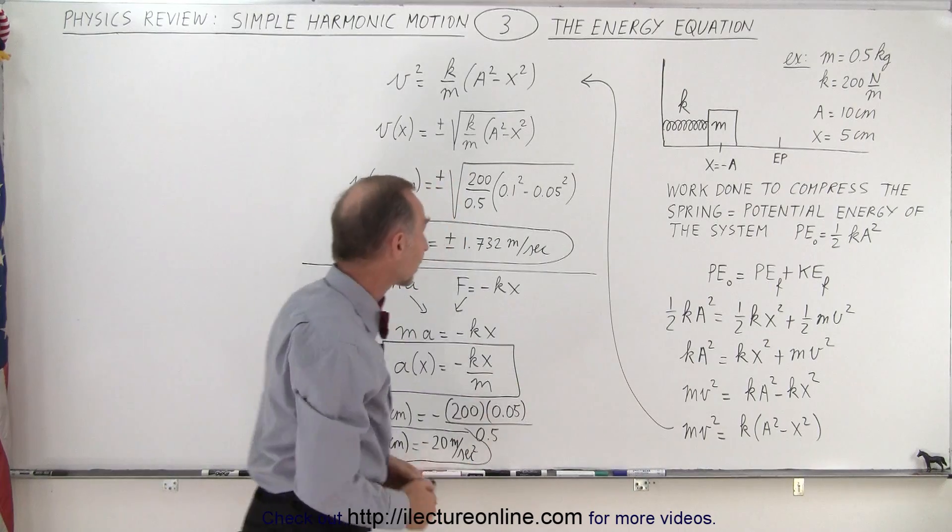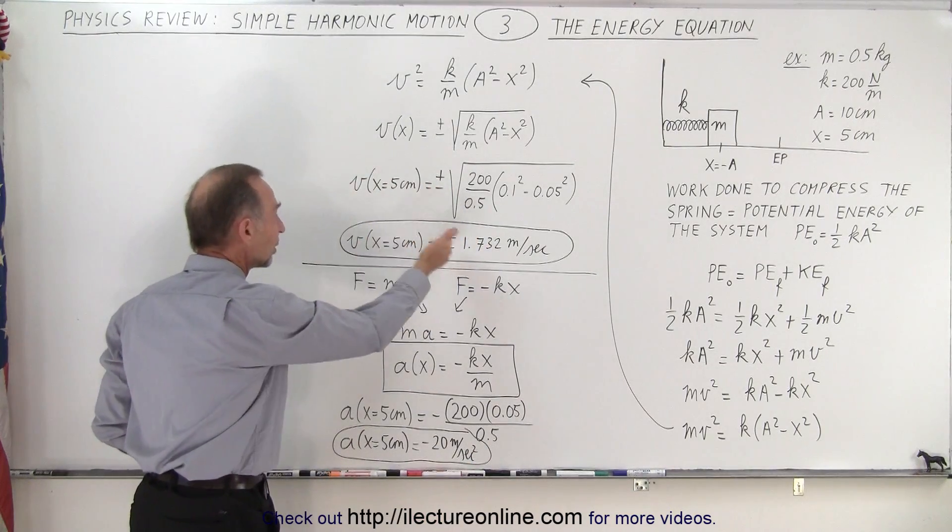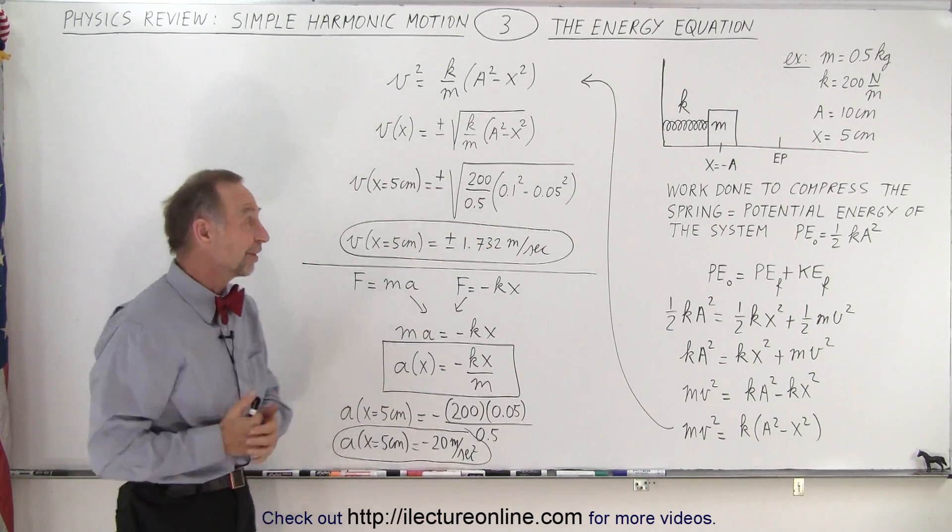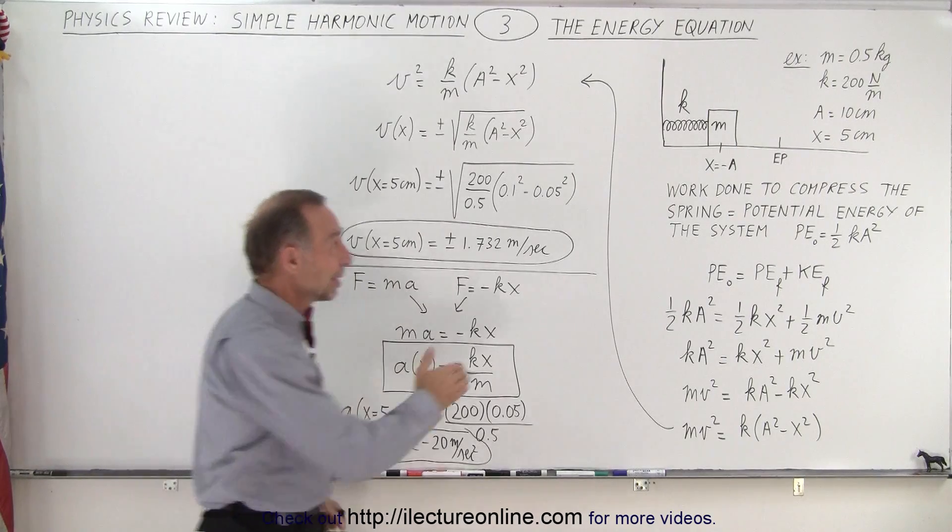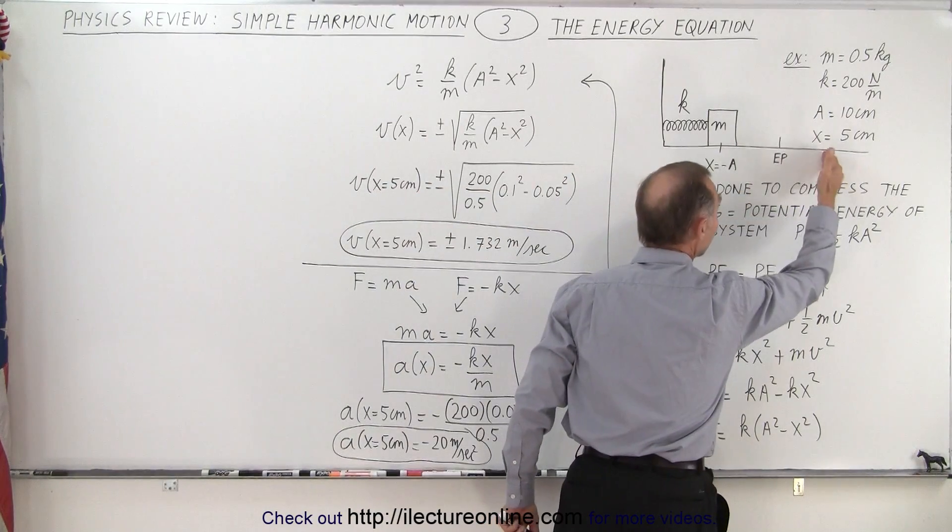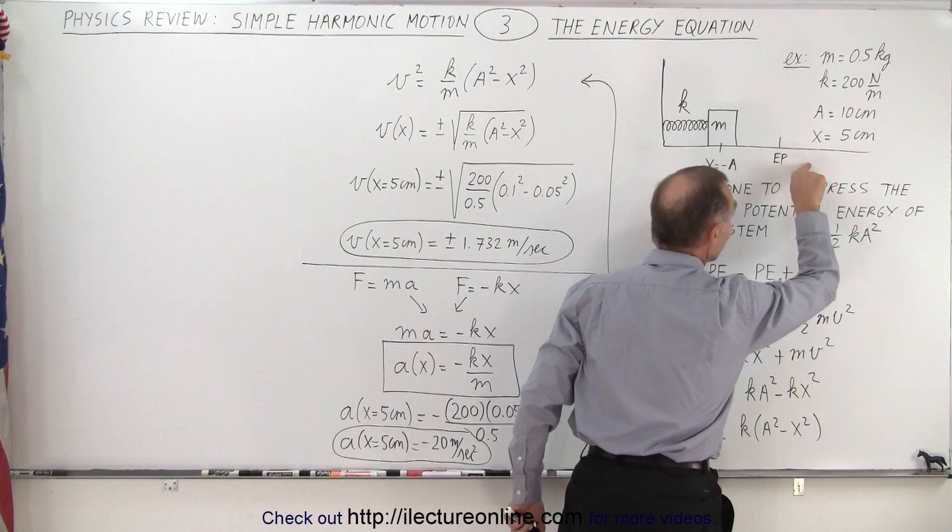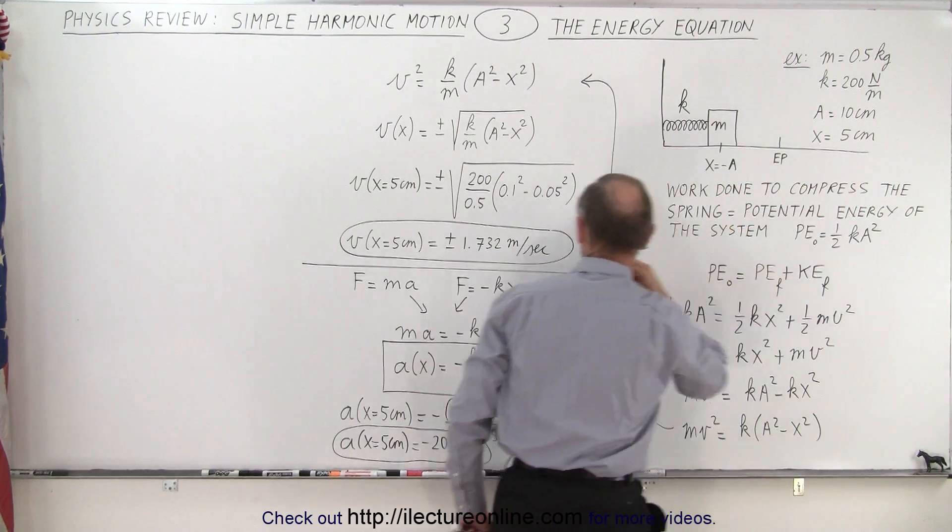If we, for example, take these numbers into account and plug them into the equation, we end up with v equals plus or minus 1.732 meters per second, meaning when you're 5 centimeters to the right of the equilibrium point, either the object is moving to the right or to the left with that velocity.